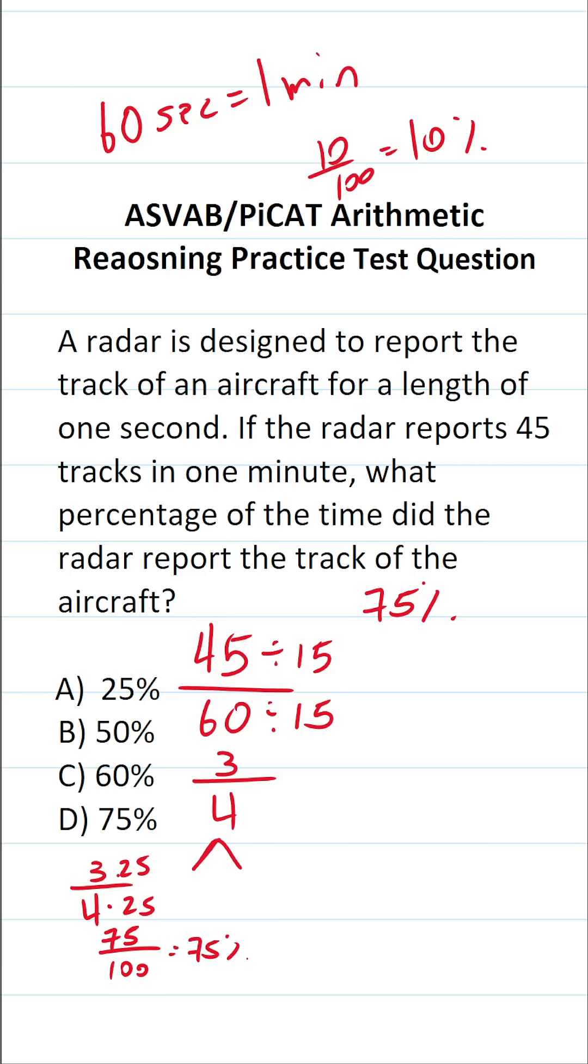The other way to convert 3 fourths to a percentage if you did not know its percentage automatically is to treat 3 fourths like long division. That is to say, you could read this as 3 divided by 4. How many times does 4 go into 3 without going over? It doesn't. So I have to add a decimal and a zero placeholder. Bring the decimal into my answer.